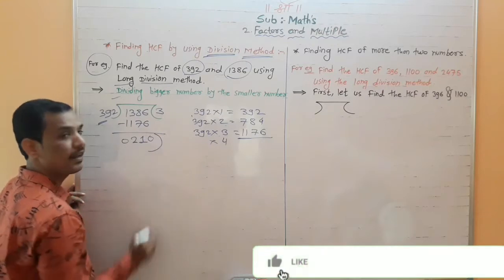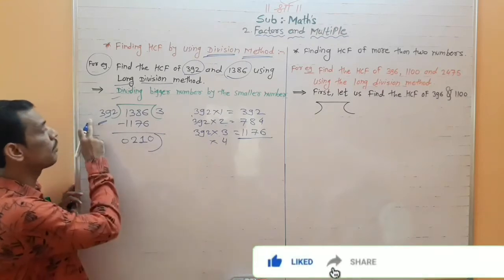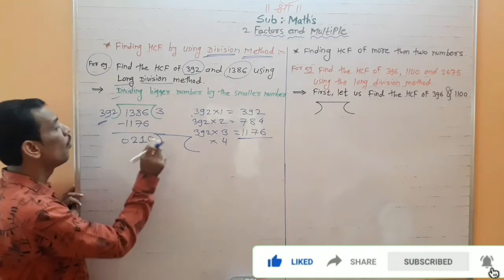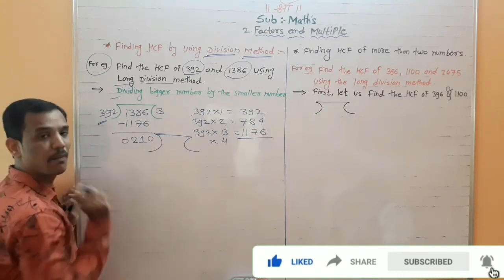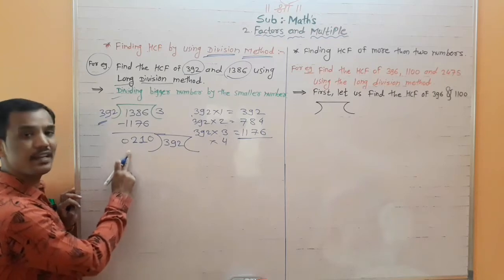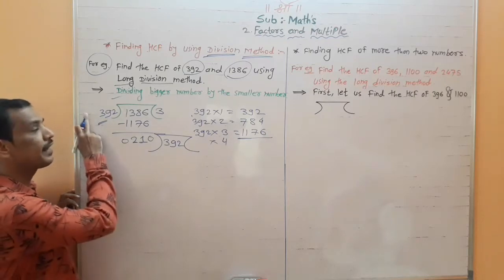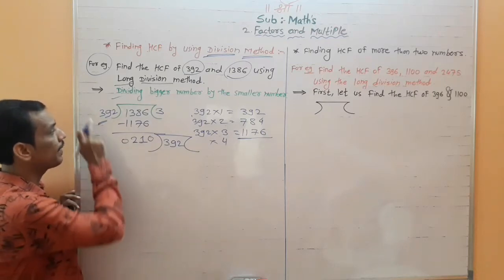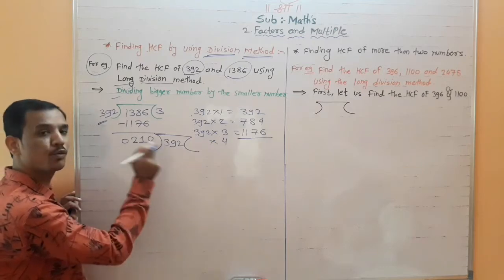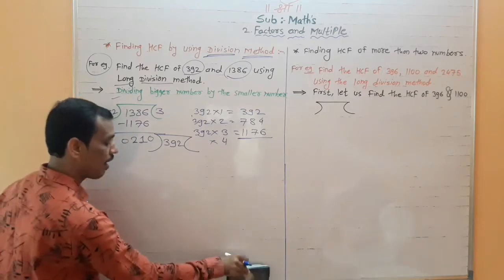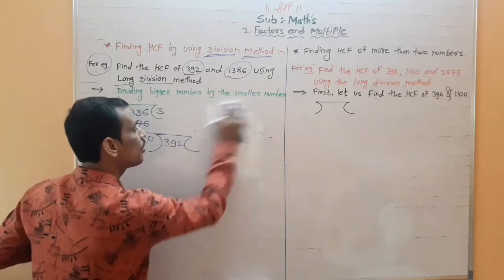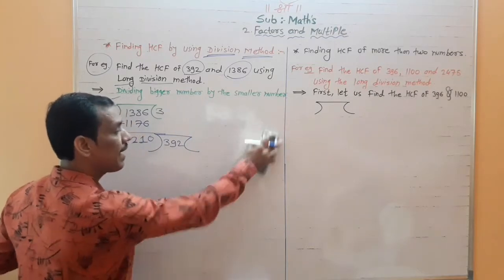Now we get the remainder 210. Put this remainder in that place. Since 210 is not divisible by 392, we write 392 on the divisor side and divide 392 by this remainder 210.